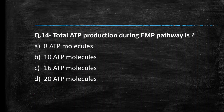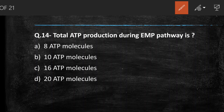Next question: total ATP production during the EMP pathway is — (A) 8 ATP, (B) 10 ATP, (C) 16 ATP, (D) 20 ATP. The right answer is option A, 8 ATP molecules. In the payoff phase 4 ATP are formed, and 6 ATP are regenerated from 2 NADH molecules, giving a total of 10 ATP. Since 2 ATP are spent in the preparatory phase, the net gain is 8 ATP.